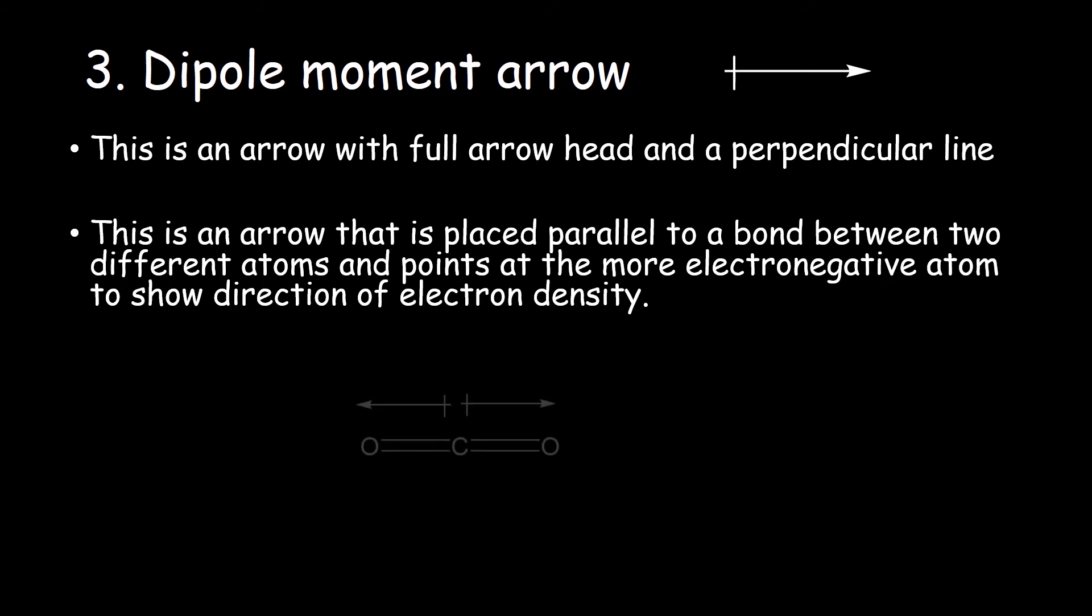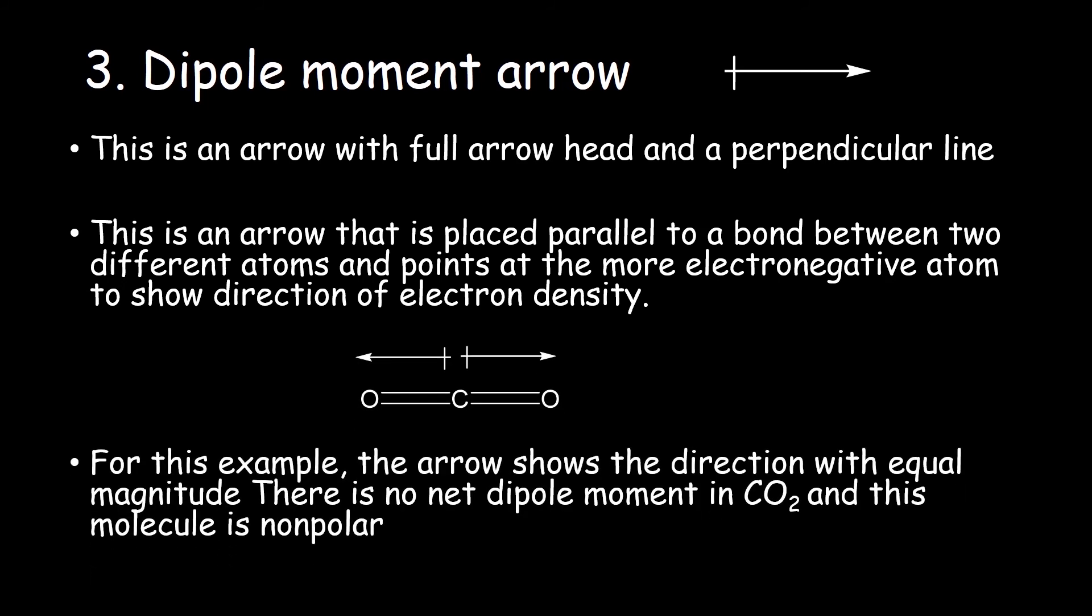In this example of carbon dioxide, the arrows are pointing opposite with equal magnitude. The net sum of these vector arrows is that they cancel, and there is no net dipole moment. And so carbon dioxide is a non-polar molecule.